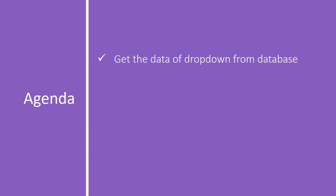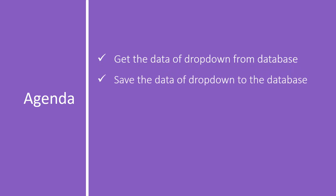We will get the data of a drop-down from the database, and for that we need to create a table in a database. We will learn how to add a new table into our existing database using a code-first approach. Then we will learn how to save the data of this drop-down to the database. So we are going to perform two operations: first, get the data; second, save the data.